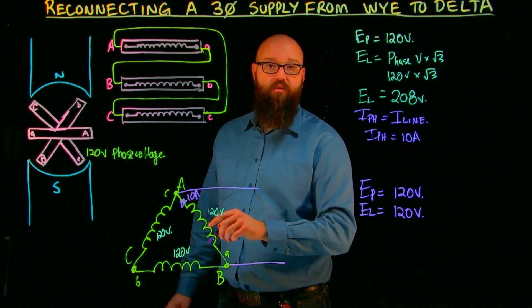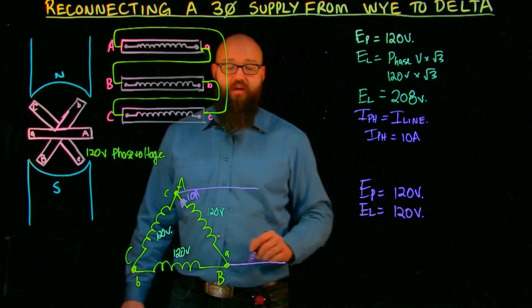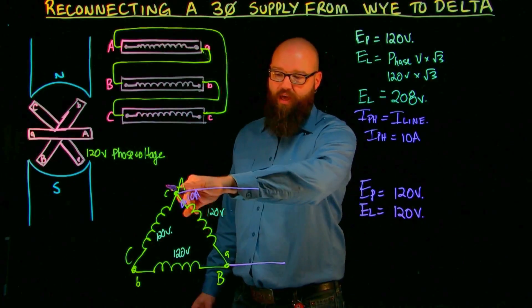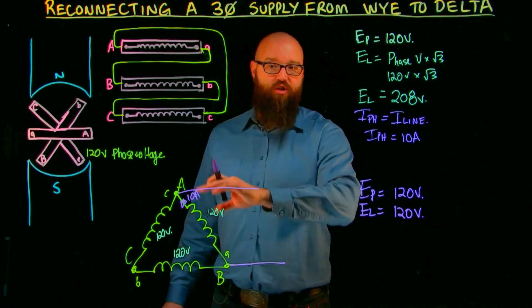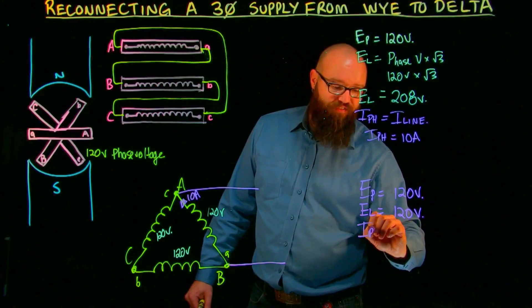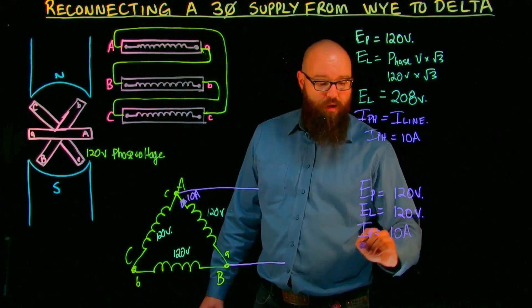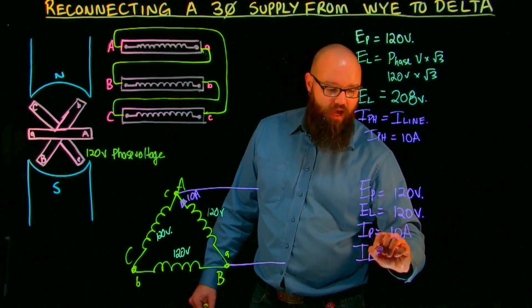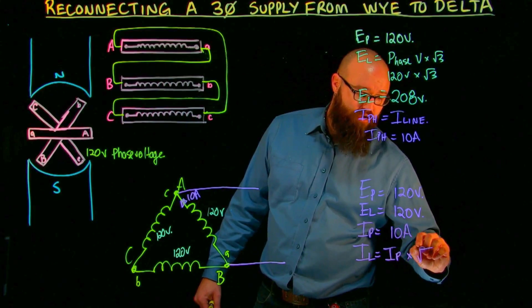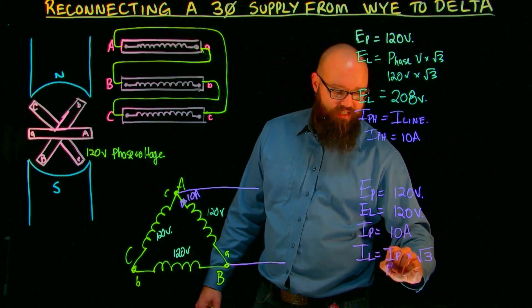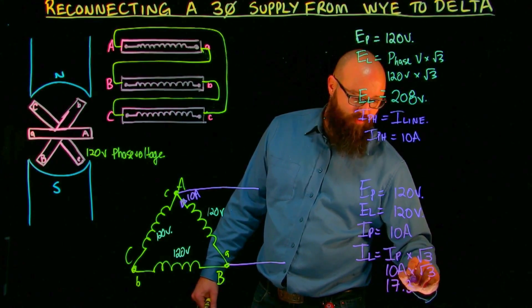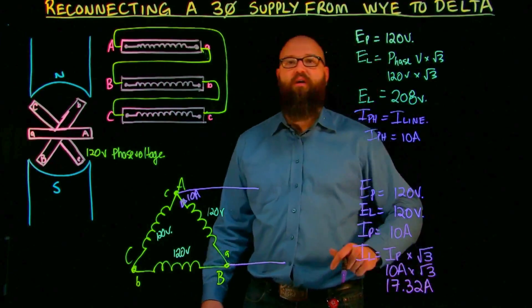So the next thing we're going to take a look at is current. I have 10 amps on my A phase. And we know that line current in a delta is made up of, for example, A to B plus A to C, not just the 10 amps of phase current anymore. So we have I of the phase is equal to 10 amps. But now I line is in a balanced system, I phase times root three, or in this case, 10 amps times root three, which means we now have 17.32 amps of line current.